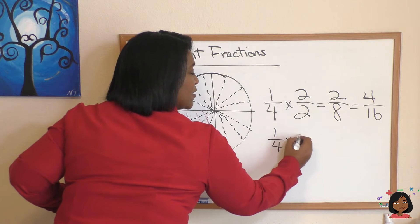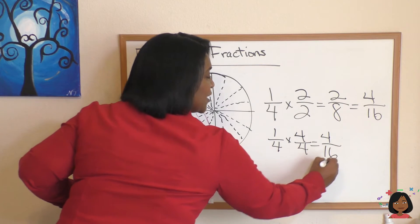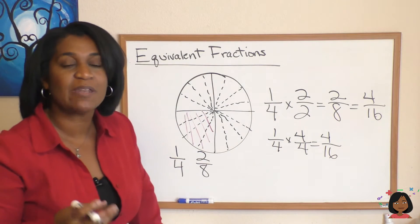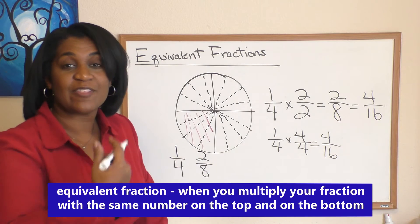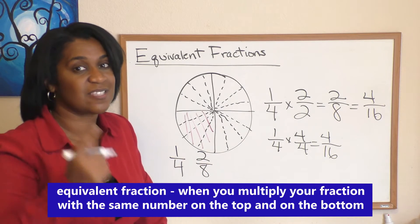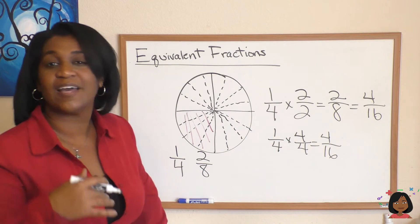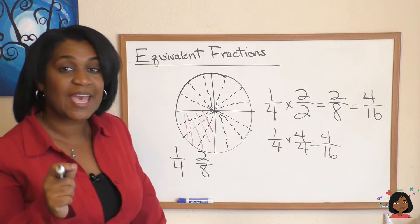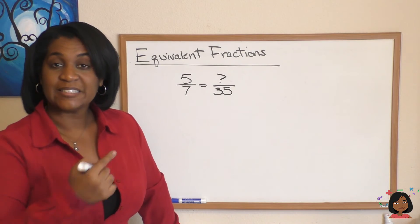Well, how do we get from one-fourth to four-sixteenths? One-fourth times four over four equals four-sixteenths. So it seems that we can have equivalent fractions by multiplying the numerator and the denominator, but it has to be the same number: two over two, three over three, five over five, nine over nine. It's the same number, it stays an equivalent fraction.